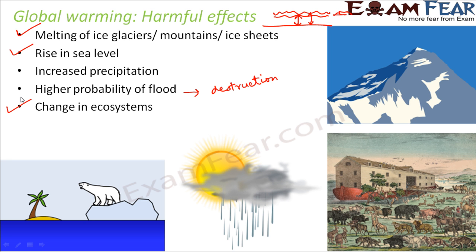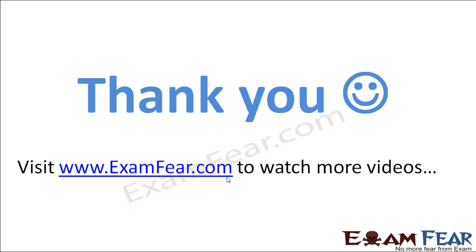Looking at the data of global warming and how the temperature has increased in the past 30 years, we should become cautious and work to control global warming. Otherwise, we should remain prepared for such adverse situations in the future. Thank you.